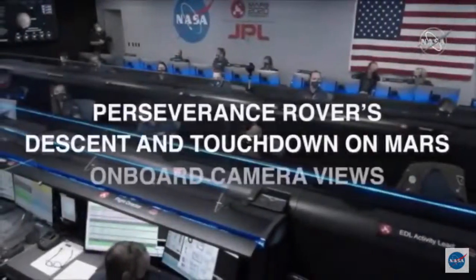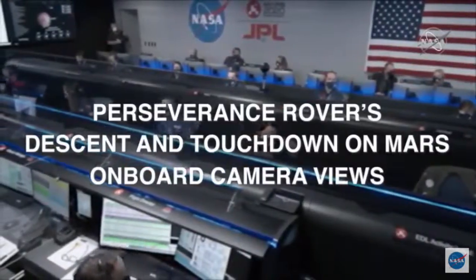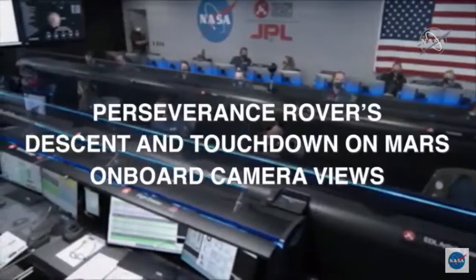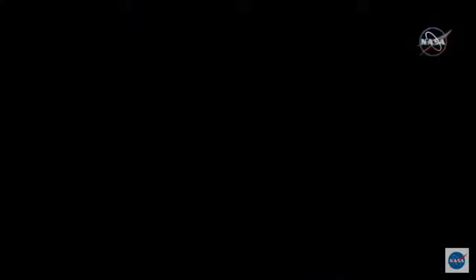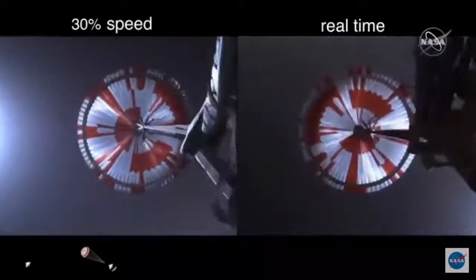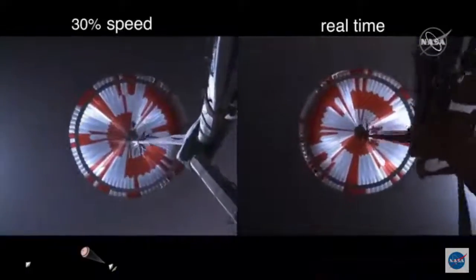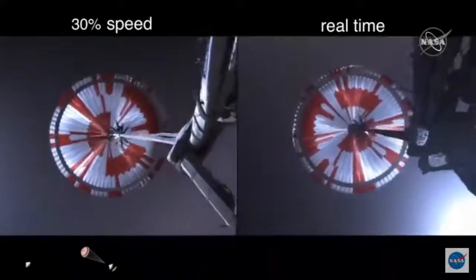Starting the straighten up and fly right maneuver where the spacecraft will jettison the entry balance masses in preparation for parachute deploy and to roll over to give the radar a better look at the ground. Parachute deploy. Navigation has confirmed that the parachute has deployed, and we are seeing significant deceleration in velocity. Current velocity is 440 meters per second at an altitude of about 12 kilometers from the surface of Mars.